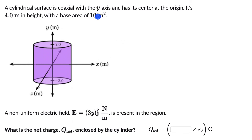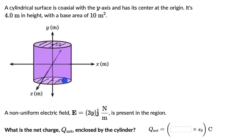A cylindrical surface is coaxial with the y-axis and has its center at the origin. It is 4 meters in height — we can see it goes from y = 2 to y = -2 — with a base area of 10 square meters. This base area of 10 square meters applies to both the top and bottom surfaces. A non-uniform electric field E = 3y ĵ is present in this region. What is the net charge enclosed by the cylinder?